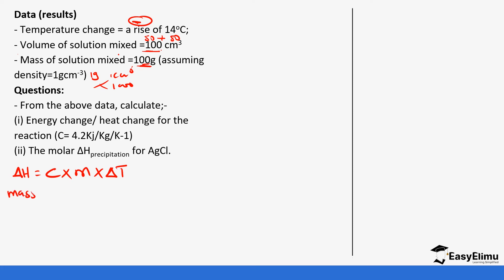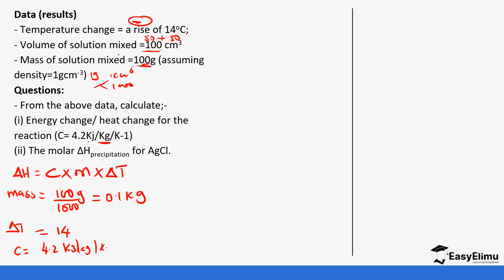The mass of the solution is 100 grams, but our specific heat capacity is in kilograms, so we divide by 1000 to get 0.1 kg. The temperature change is 14°C and the specific heat capacity is 4.2 kJ/kg/K. So the heat change is 4.2 × 0.1 × 14, which gives us 5.88 kilojoules.